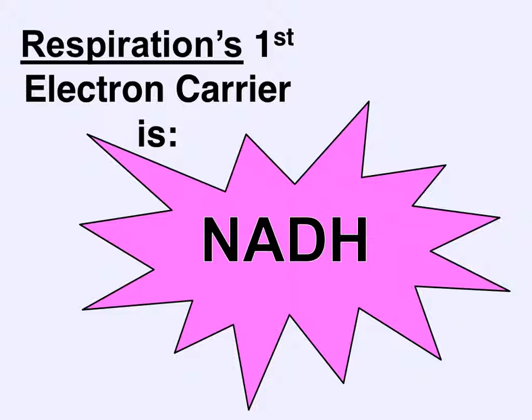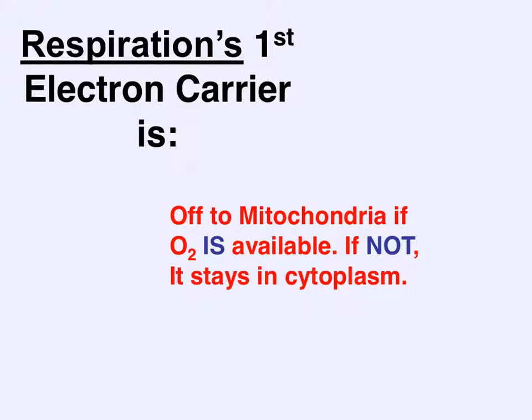The availability of oxygen determines where this NADH will locate itself. If oxygen is available, NADH will head to the mitochondria to perform aerobic respiration. But if not, it'll stay in the cytoplasm for fermentation.